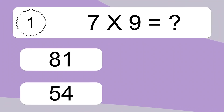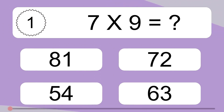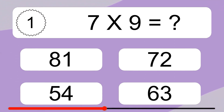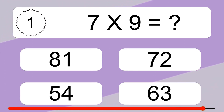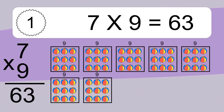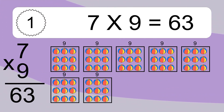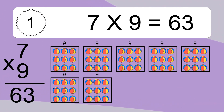7 times 9 equals what? 7 times 9 equals 63. We have 7 boxes, and each box has 9 colorful balls inside. If you count all the balls in all the boxes together, you will have 7 times 9 balls. This equals 63 balls.